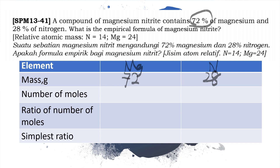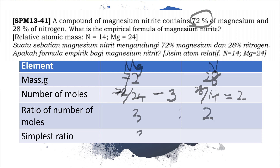You get 3 moles of magnesium and 2 moles of nitrogen, giving a ratio of 3:2. The simplest ratio is 3:2, so the empirical formula of magnesium nitride is Mg₃N₂.